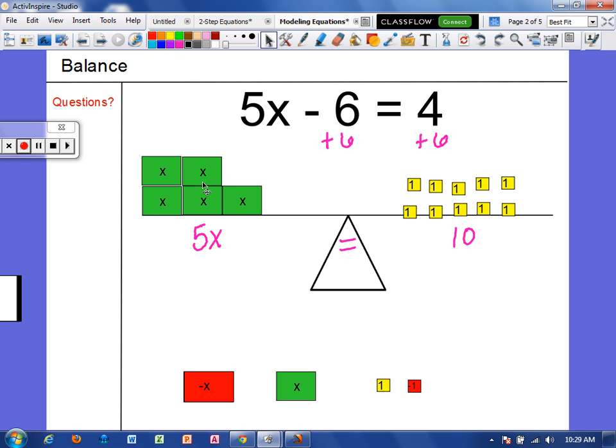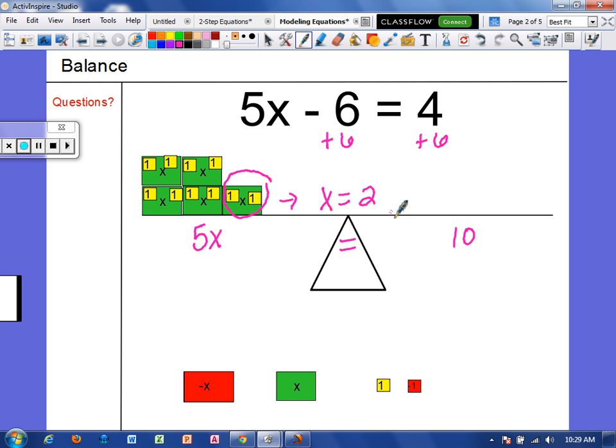So the balance is showing us that 5x equals 10. So now what I want to do, since I'm only left with x's, I want to figure out how many 1's each x can hold. So I'm going to evenly distribute the 1's onto each x. So far each one can hold 1. Let's see if they can all hold 2. Alright, so each x holds two positive 1's. So if I were to focus on one of these x's, I see that 1x equals a positive 2.